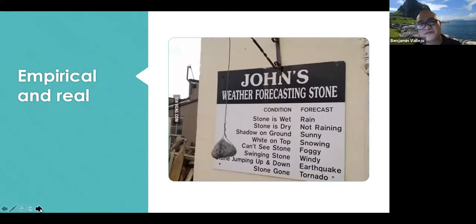This is a meme on the internet, quite famous. It's a tourist attraction in some town in Canada. You have the stone here, and you're supposed to observe the stone. If the stone is wet, then it's raining. If it's dry, it's not raining. If there's a shadow on the ground, it's sunny. If the stone is jumping up and down, there's an earthquake. And if the stone is gone, the tornado took it away. We are observing what's on the stone, supposedly, and that's empirical. This forecast here is your construction of a fact based on what you observe on the stone.